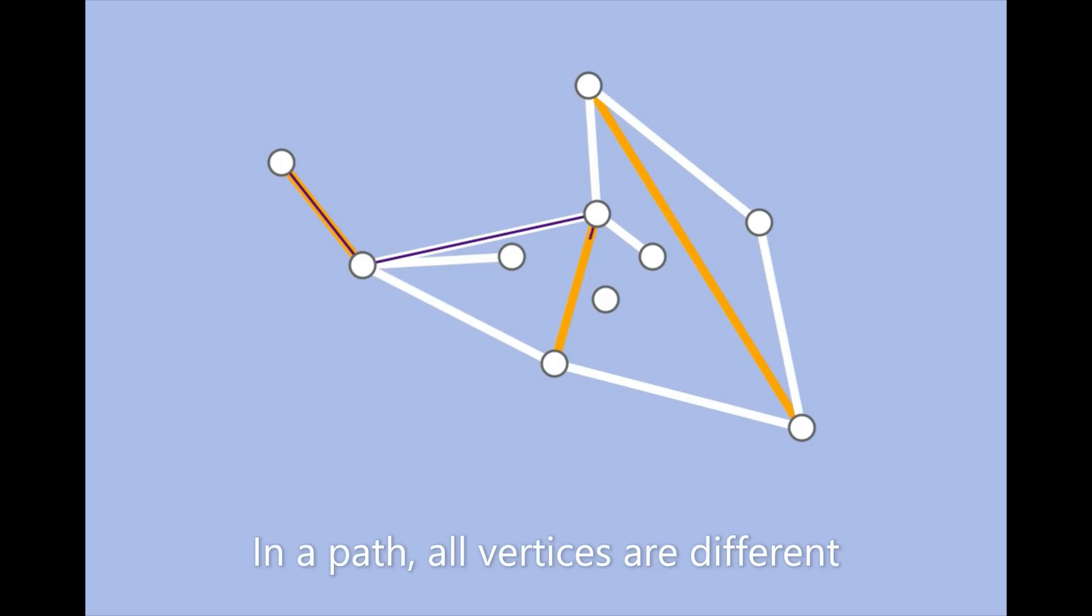An alternating path is a path which alternates between matched and unmatched edges. For example, this one goes matched, unmatched, matched.